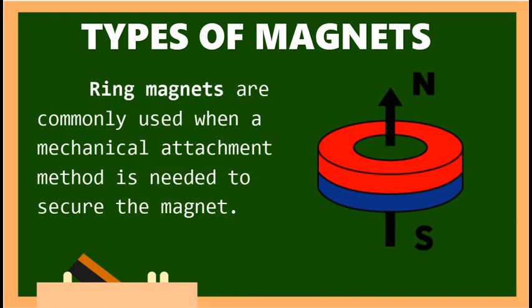Another type of magnet is a ring magnet. Ring magnets are commonly used when a mechanical attachment method is needed to secure the magnet.